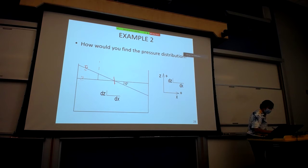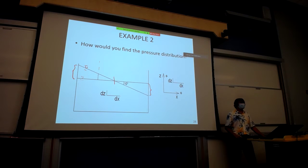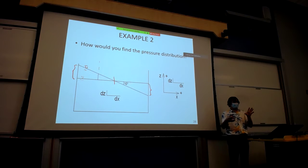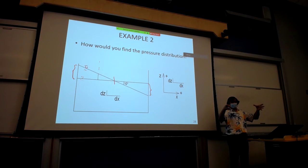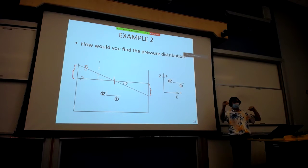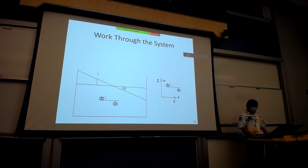Note the symmetry: the fluid went up on the left-hand side the same distance it went down on the right. That's true for a symmetric container. If it's a box, rectangle, or cylinder, it goes up on one side the same as it goes down on the other.